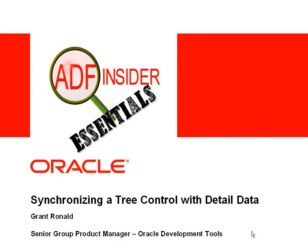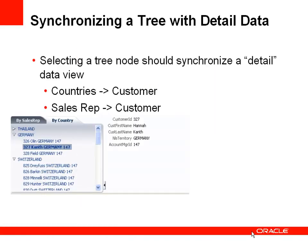In this demonstration you'll see how you can synchronize a UI tree control with detailed data. A common example is where you have a UI tree control and selecting an item should show detailed data for the node selected. For example, a tree control showing countries where selecting a customer node shows that customer's details, or a tree control showing sales reps where selecting a customer shows the details of that customer.